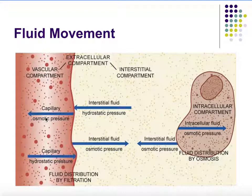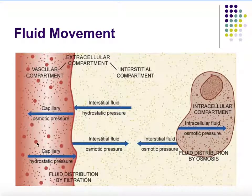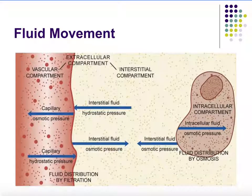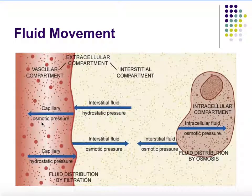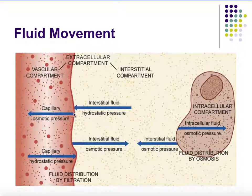We have three compartments: the intracellular compartment, and everything outside is extracellular — further divided into plasma in the vasculature and the interstitial. How fluid moves is determined by two major pressures: osmotic pressure and hydrostatic pressure. Osmotic pressure is about osmosis — water follows solutes. When capillary osmotic pressure increases, the more solutes we have in our capillaries, that draws fluid into the capillaries.